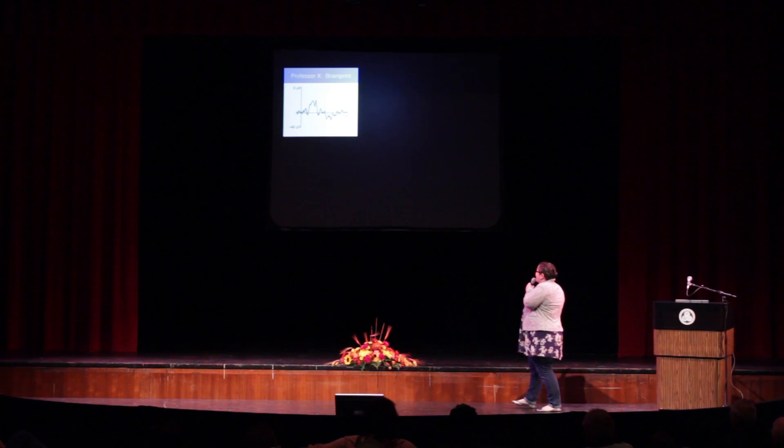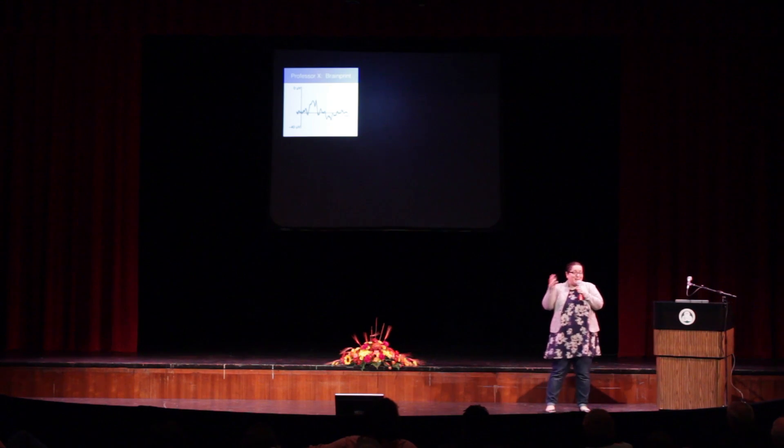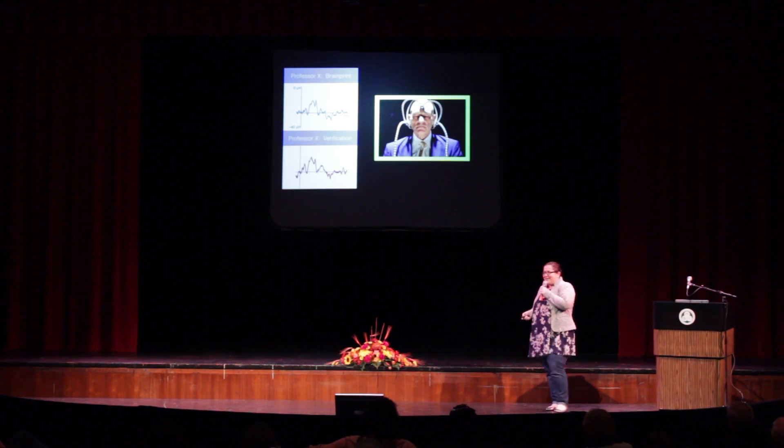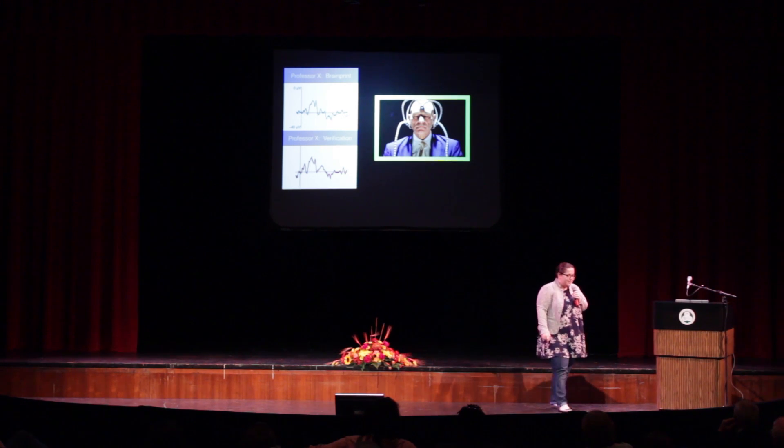Let's say this is Professor X's brain print — a real brain print, though he's fictional. If Professor X wants to get into a system secured by the brain print, he provides his brain activity a second time. If it matches his first brain print, the system recognizes him and lets him in. But if Mystique tries to provide her brain activity, it recognizes the mismatch and doesn't give her access.